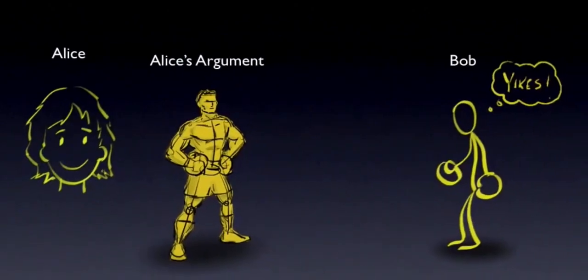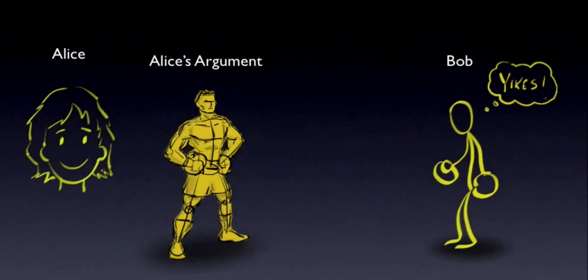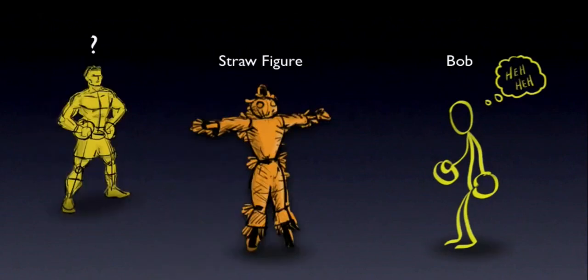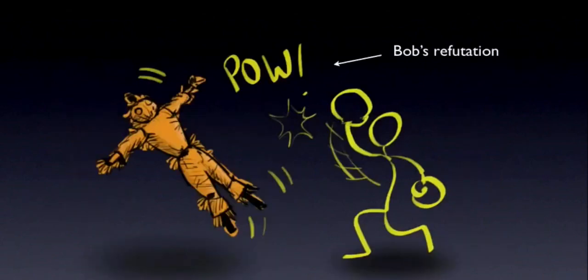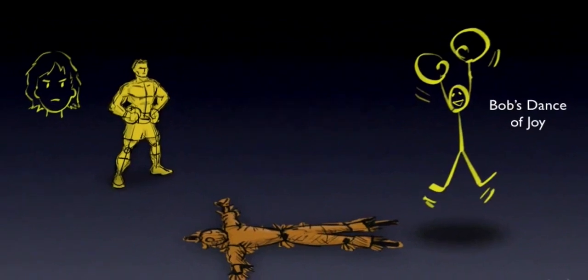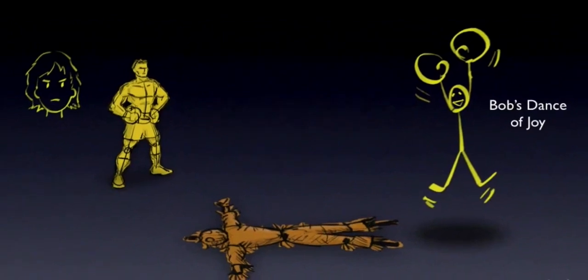The fallacy works like this. Alice offers an argument to Bob — she wants to convince him of something. Let's say that Alice's argument is really pretty strong, like this boxer. Bob isn't sure he can handle this argument, so instead of trying to refute Alice's actual argument, Bob decides to engage a different argument — he decides to engage this straw figure. What is the straw figure? It's a weaker, distorted version of Alice's original argument. Because it's weaker, Bob is easily able to refute it. The straw figure fallacy is complete when Bob claims that he has successfully refuted Alice's original argument.